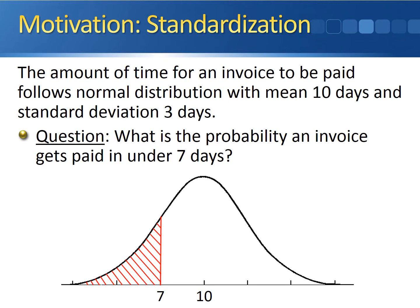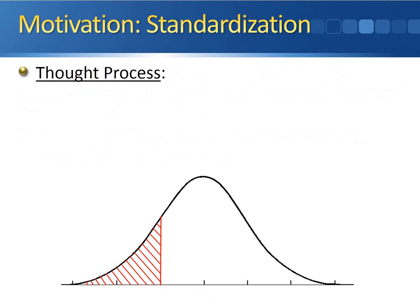In order to figure out the red shaded region, here's what we're going to do. We can't look up seven in the standard normal distribution table because it isn't a standard normal random variable.